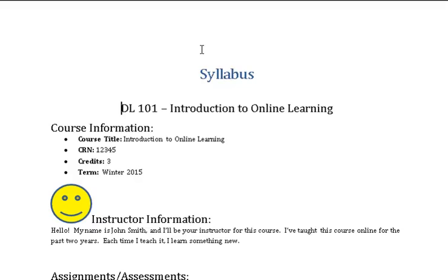Heading level one: Syllabus. Heading level two: DL 101 — Introduction to Online Learning. Heading level three: Course Information. Bullet: Course title — Introduction to Online Learning. Bullet: CRN — 12345. Bullet: Credits — three. Bullet: Term — Winter 2015.